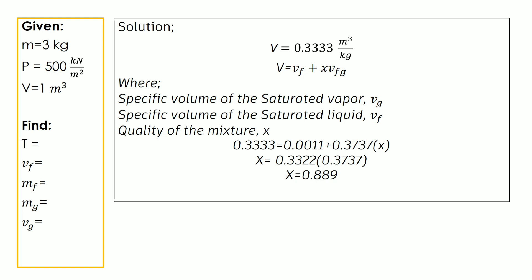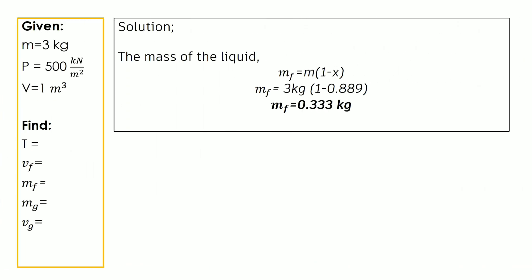After obtaining the quality x of the mixture, we can now find the mass of the liquid. The formula is: mass of liquid equals total mass multiplied by (1 minus quality x). With a total mass of three kilograms and a quality x of 0.889, we get the mass of the liquid as 0.333 kilograms.